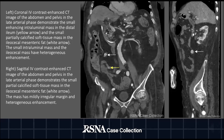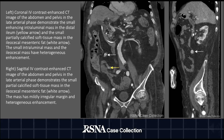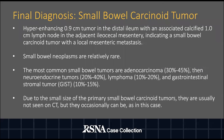On the left, a coronal view of the same CT demonstrates the small enhancing intraluminal mass in the distal ileum labeled by the yellow arrow, and the small partially calcified soft tissue mass in the ileocecal mesenteric fat labeled by the white arrow. On the right, a sagittal view demonstrates the same partially calcified soft tissue mass in the ileocecal mesenteric fat labeled by the white arrow. Imaging findings are consistent with a small bowel carcinoid tumor with local mesenteric metastasis.